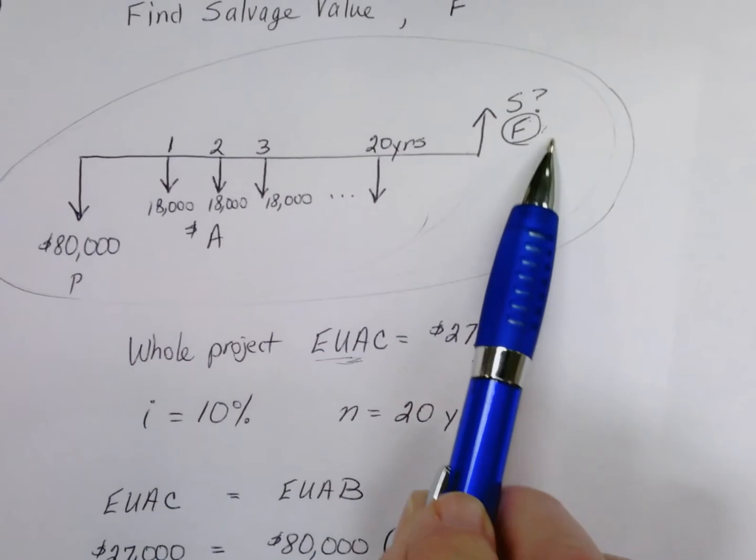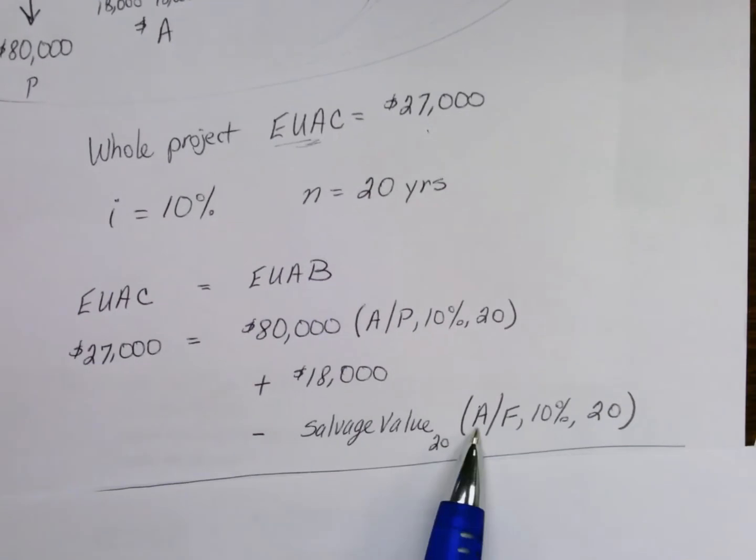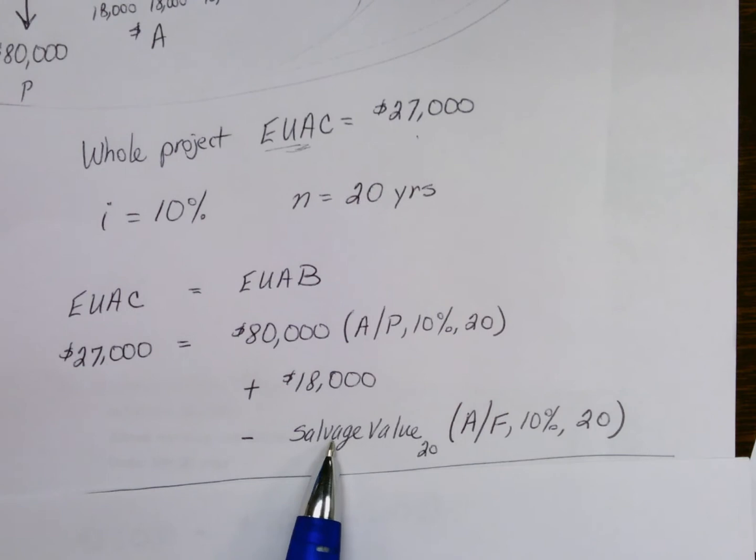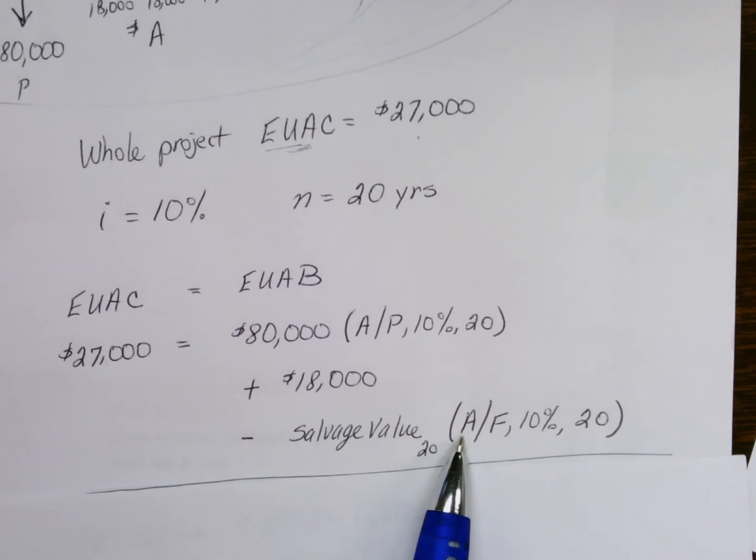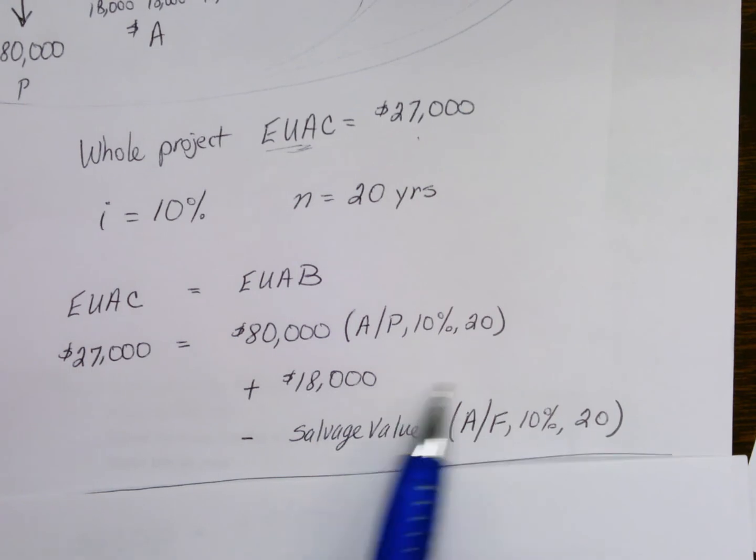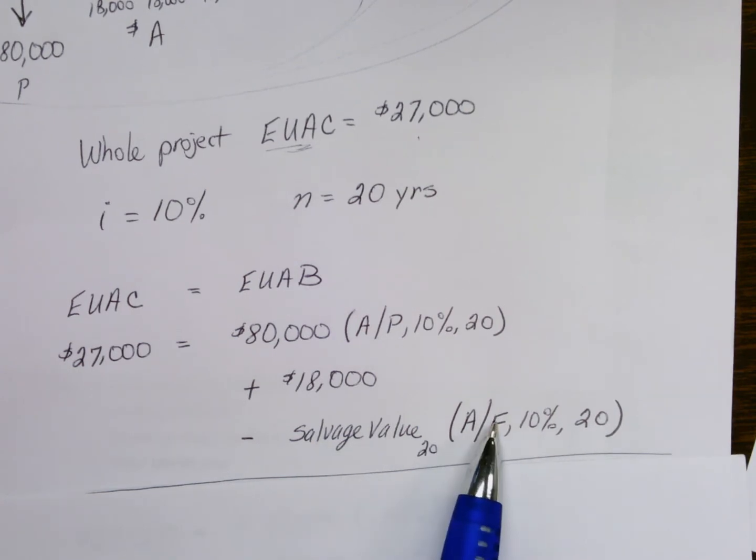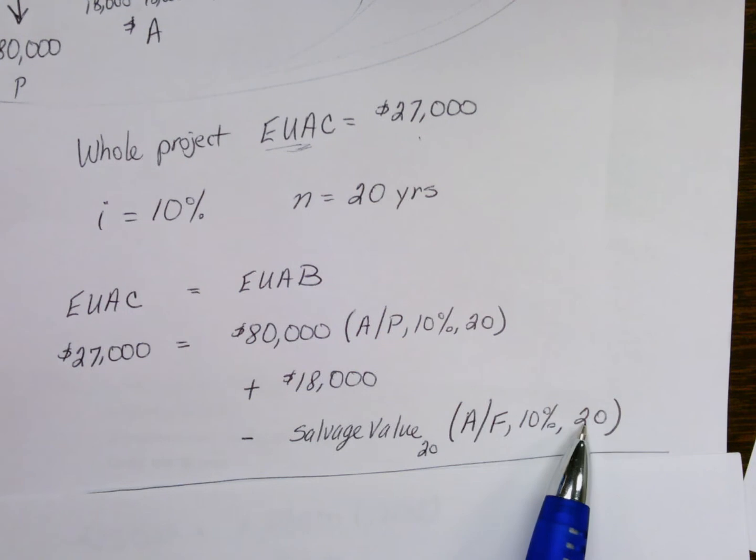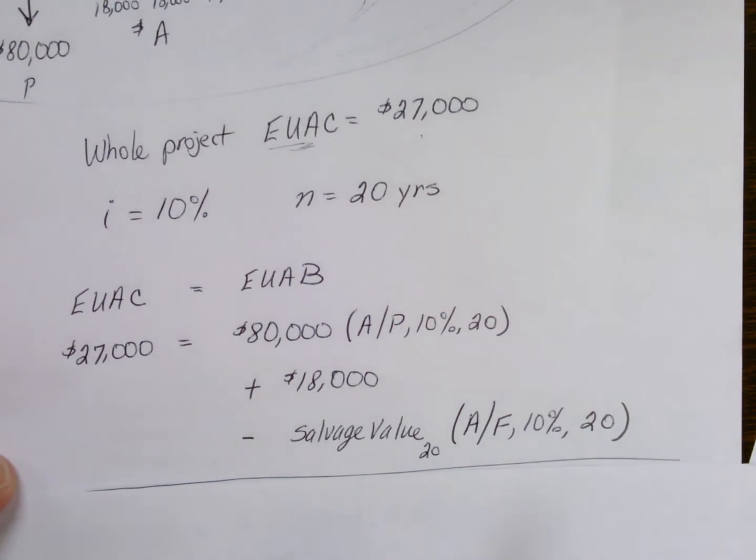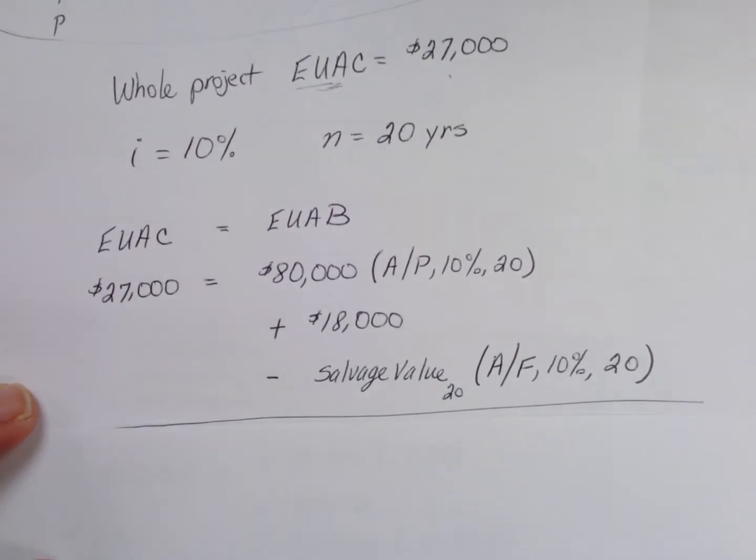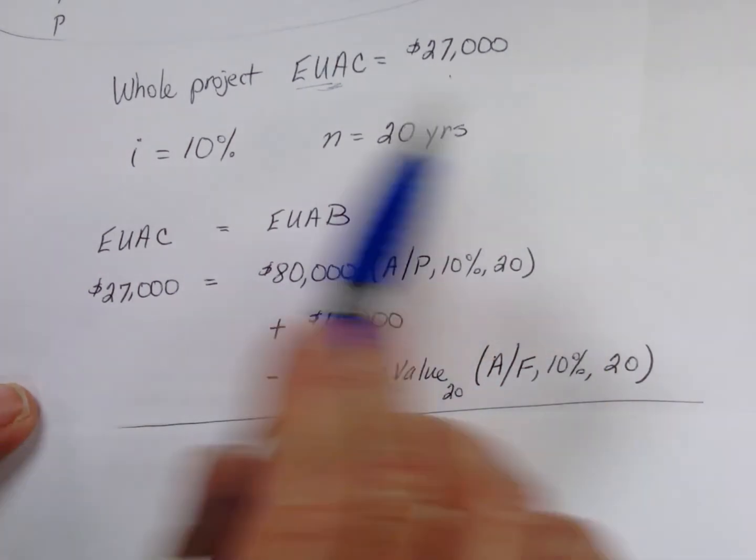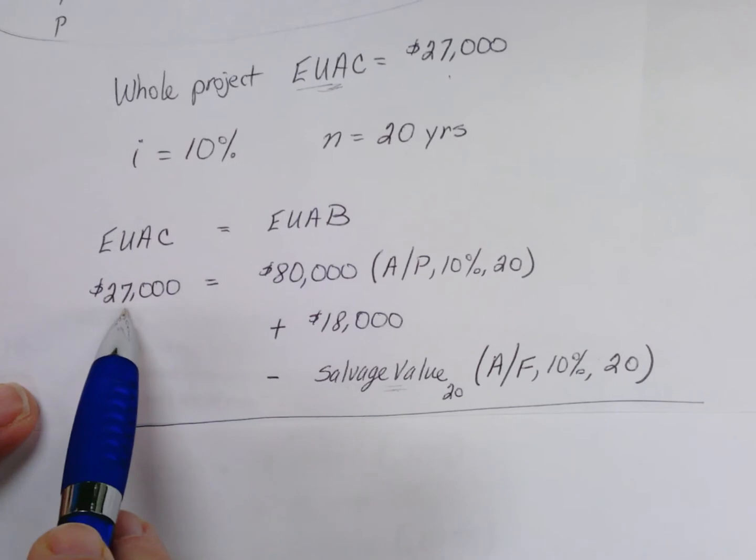Plus we have some future cash flow out here for the salvage value, and we're again trying to turn that future salvage value into its equivalent annuity. So find A given the future value, and that's actually what we're looking for, at 10% for 20 years. It's a little bit confusing—a lot of terms are different here than we've dealt with before. So we're trying to actually look for the salvage value necessary to make this entire cash flow situation turn into an average of $27,000.